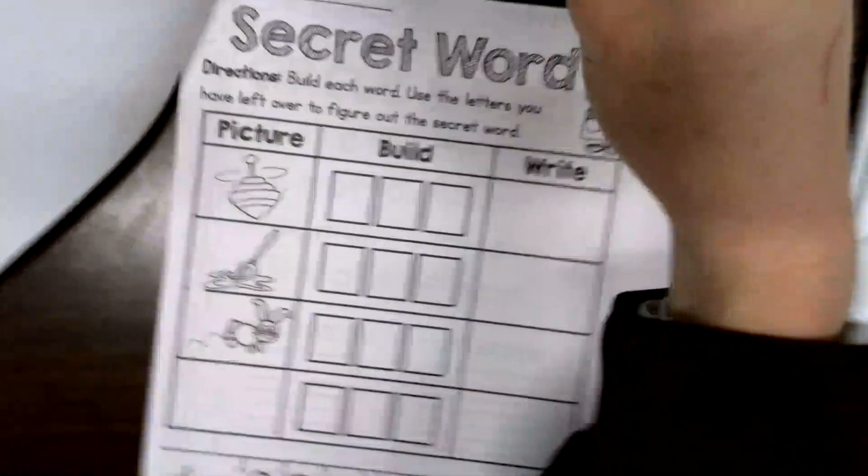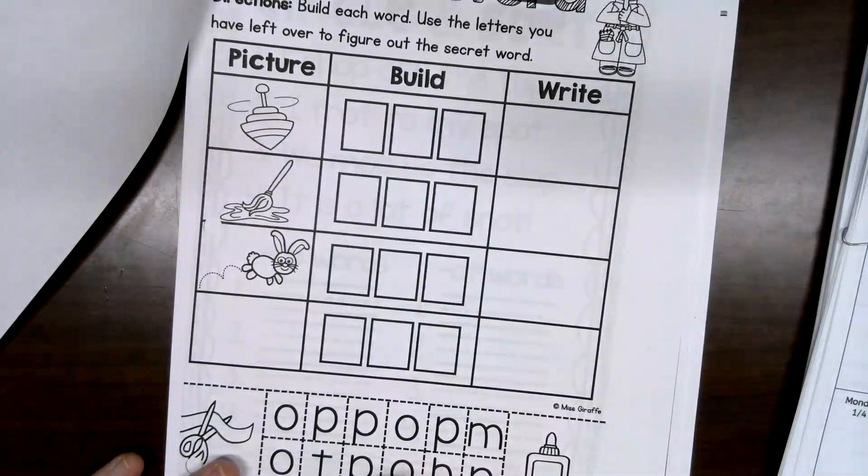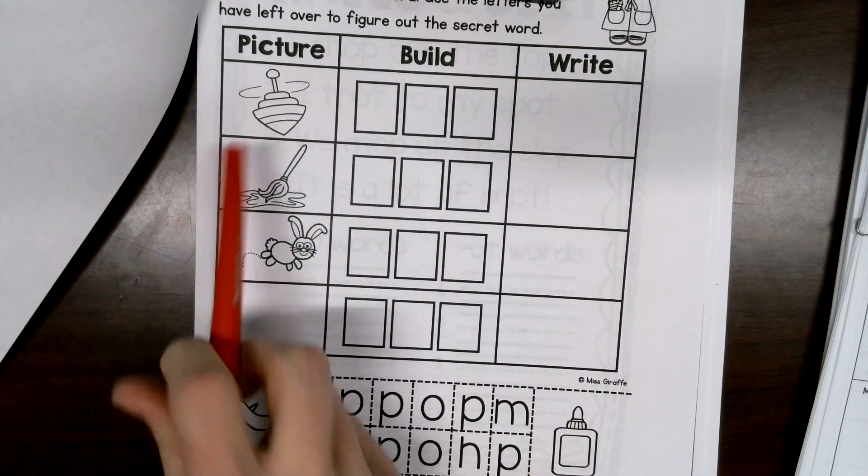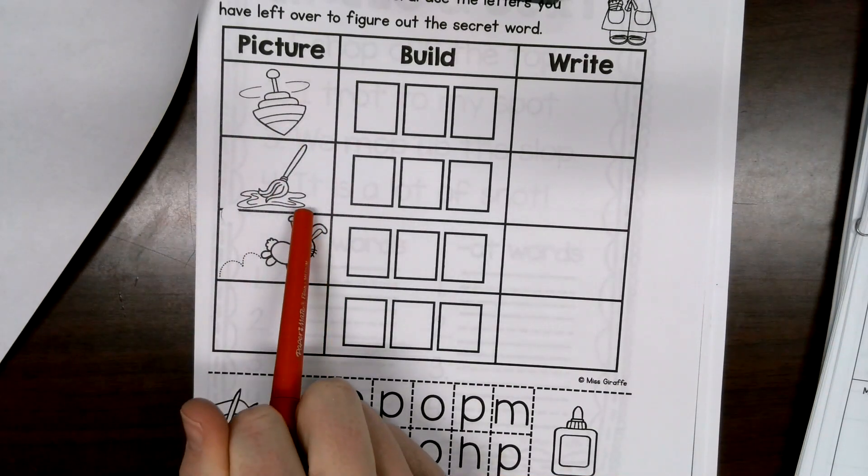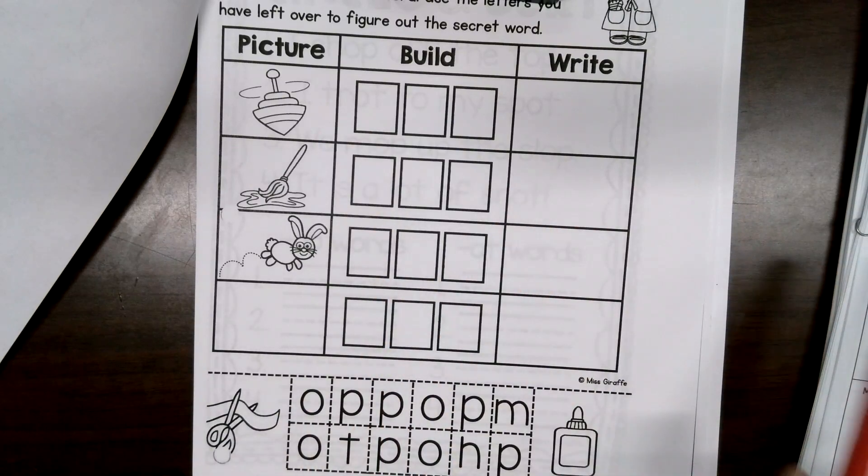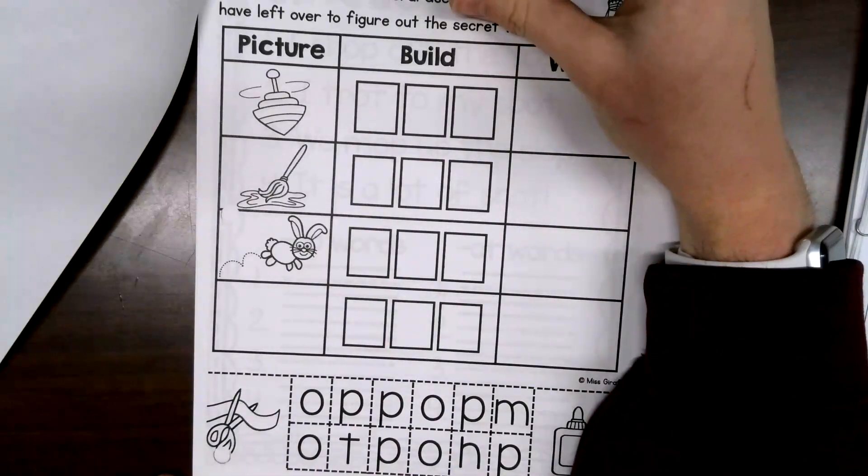This one is a build one. We've done these before. Cut out the letters down here, build your words, and then write them in the boxes. Our words are top, mop, and hop. So cut these out, glue them in, and then write them. Pause video here. Do that. Hit play when you're ready to move on.